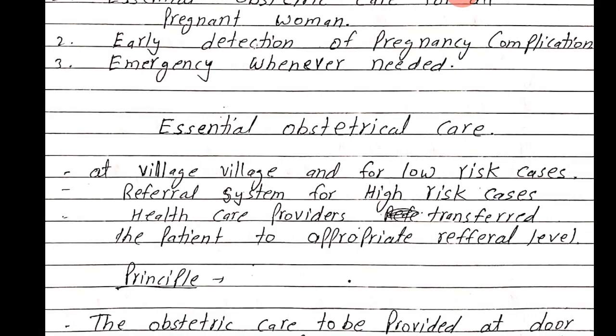Essential obstetrical care mein hum dhekhte hai — yeh village level pe ho sakti hai, ya jahan low risk cases hain wahan essential obstetrical care di ja sakti hai. But WHO ki recommendation ke according, high risk cases ke liye referral system banaya gaya hai. Jo obstetrical care providers hote hain, jaise ki ANM, TBA, ya phir medical officer ya general practitioner — woh high risk cases ka assessment karke unko referral level hospital mein transfer karte hain, jahan un high risk cases ko achhe se manage karte hain.